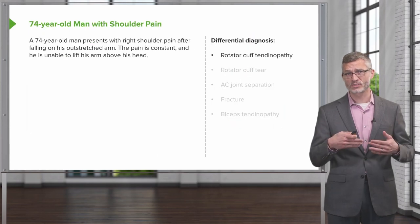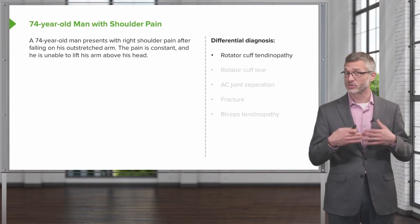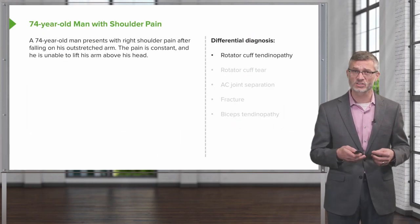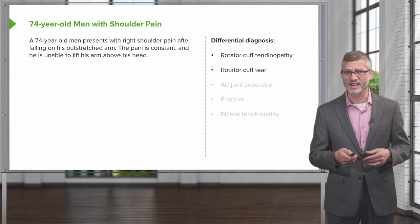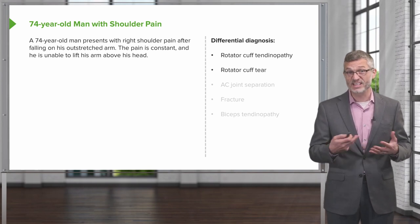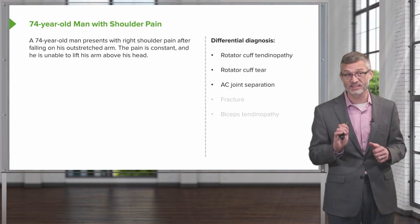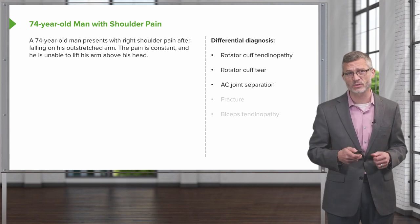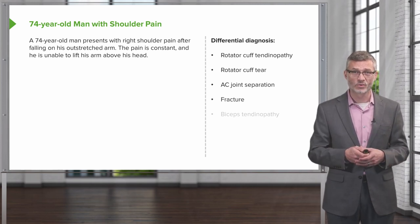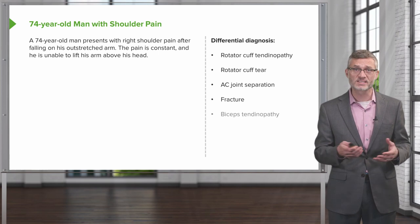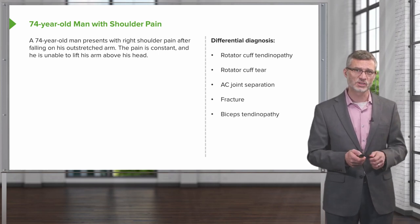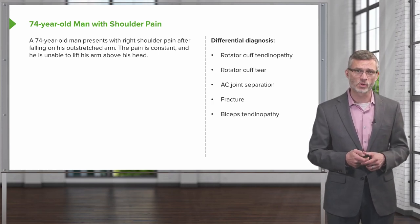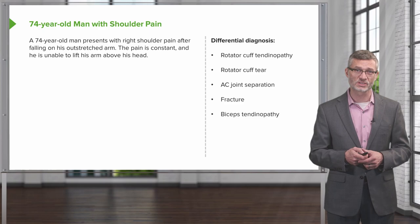Returning to our case, there are a lot of different things to consider — whether it's rotator cuff tendinopathy or tear, an AC joint separation given that he fell onto his outstretched arm, a possible fracture, or perhaps biceps tendinopathy. Let's move on to looking at the skills required to perform a competent physical exam.